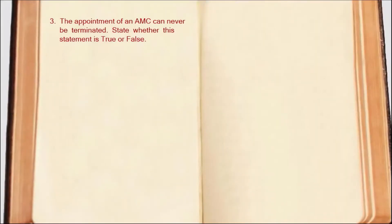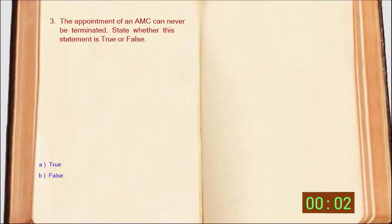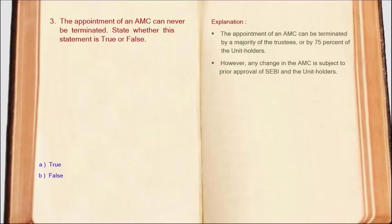Next question: The appointment of an AMC can never be terminated — state whether this statement is true or false. Trustees by majority vote, or 75% of investors' consent, can terminate the appointment of an AMC. But any changes in the case of AMC will depend on unit holders' and SEBI's approval. So the correct answer is Option B: False.